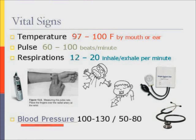Blood pressure. Blood pressure measures the force of the circulating blood on the walls of the arteries. The average blood pressure is 120 millimeters of mercury systolic over 80 millimeters of mercury diastolic. Blood pressure is the hardest vital sign to measure and takes a lot of practice to master. The following steps describe how to measure a patient's blood pressure.